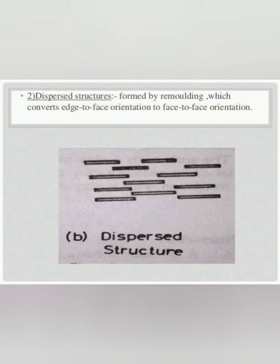The conversion of dispersed structure back into flocculated structure is known as thixotropy. Thixotropy is the phenomenon of regaining of lost strength with the passage of time under constant water content.